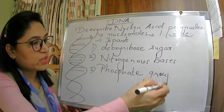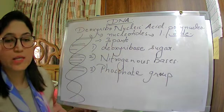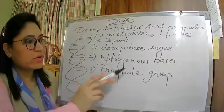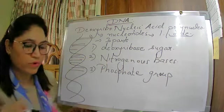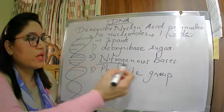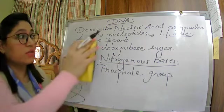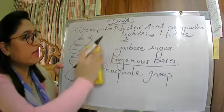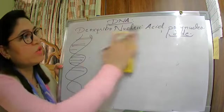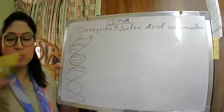You should know that DNA is made up of nucleotides, and one nucleotide has three parts: deoxyribose sugar, nitrogenous bases, and phosphate group. We have already studied this — I gave you a full PPT presentation on DNA — so we are just revising.